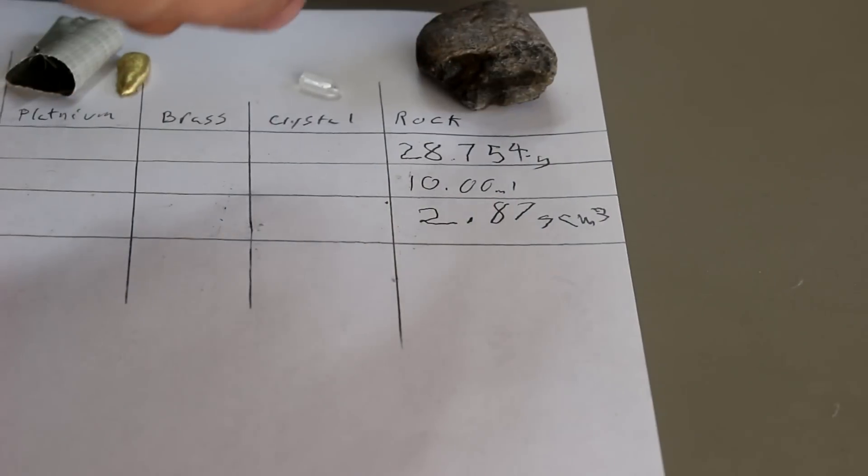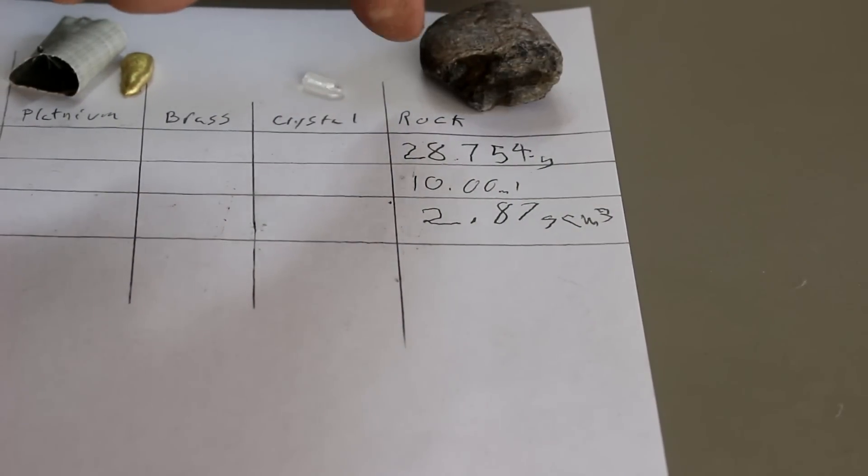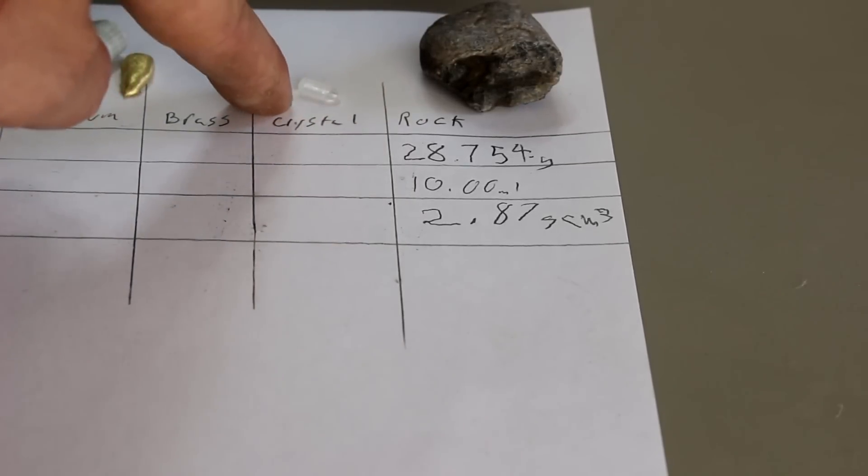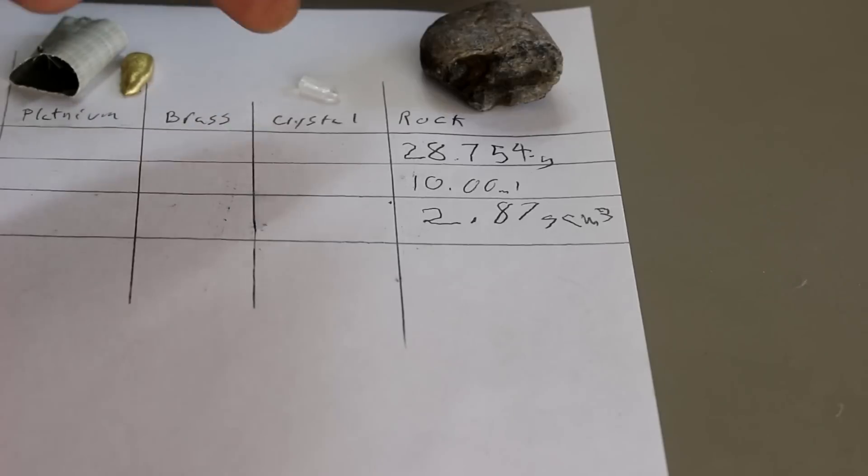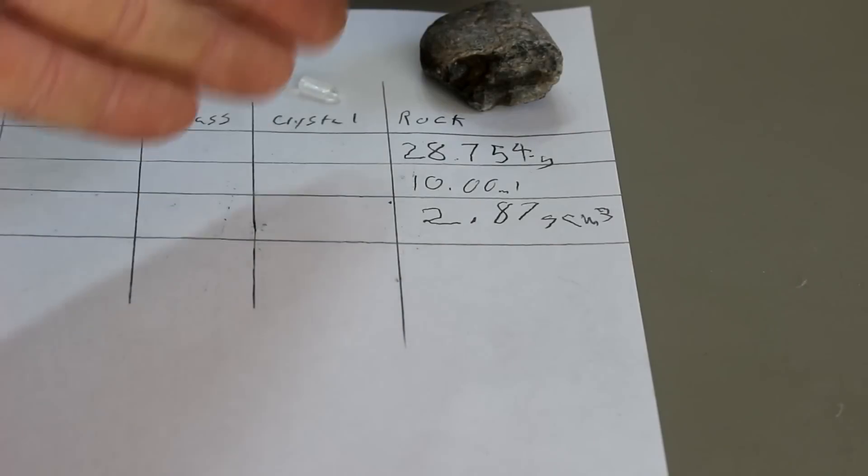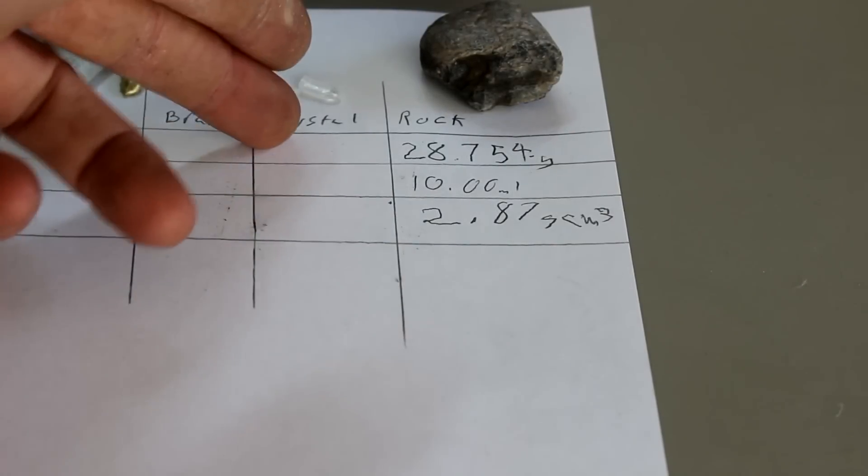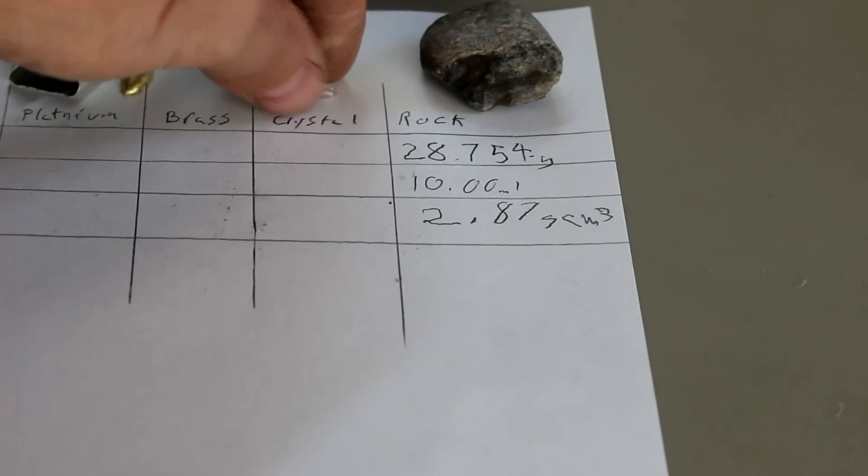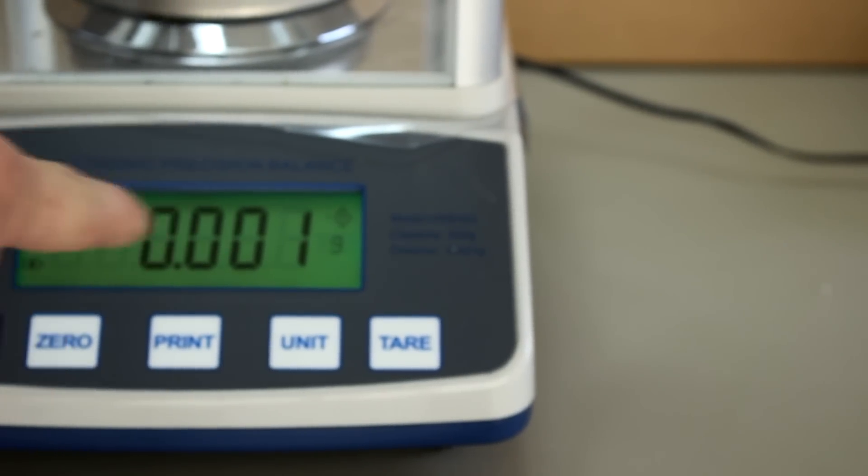Now what would happen if instead of a large rock you had to measure the density of a tiny crystal? You see for something this small you'd have to use a graduated cylinder with markings on the order of a hundredth of a milliliter. I know the university does, but I don't personally own a graduated cylinder that's that accurate. However, I do have a scale that can measure out to the milligram.